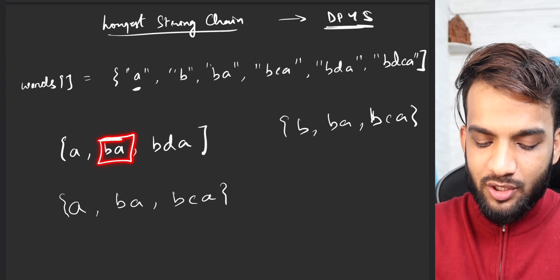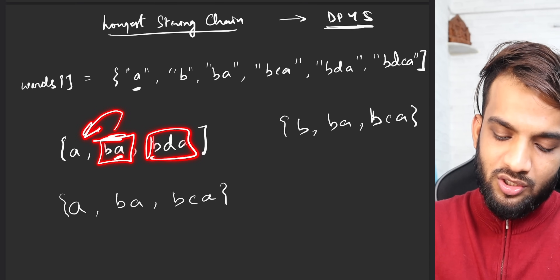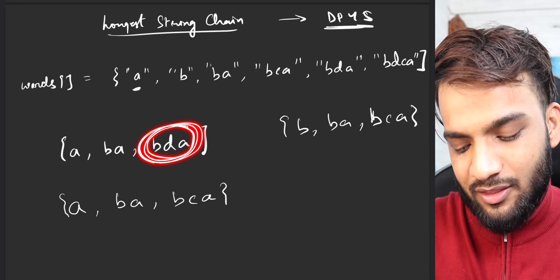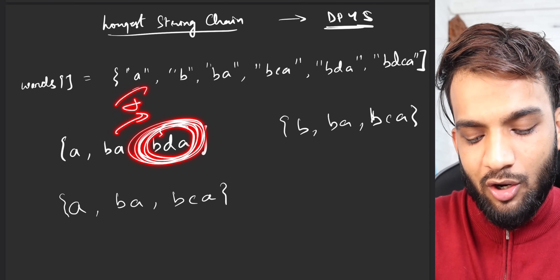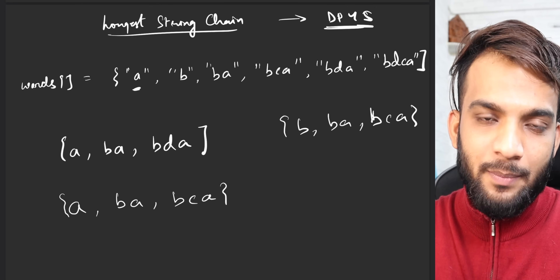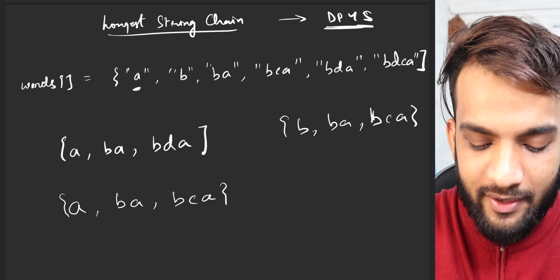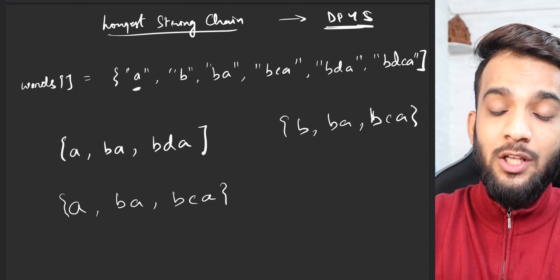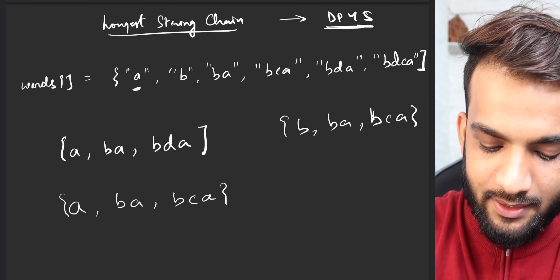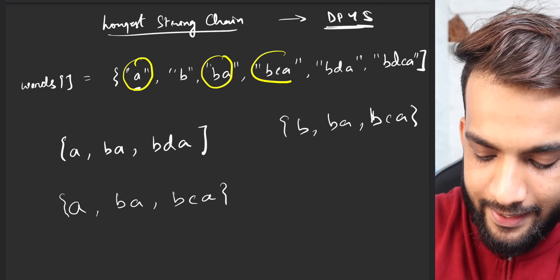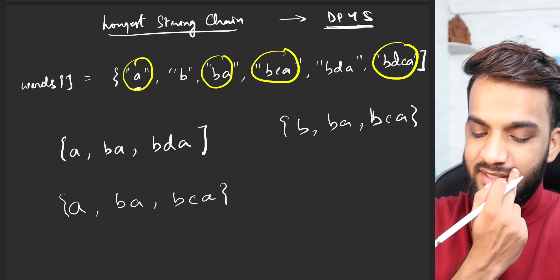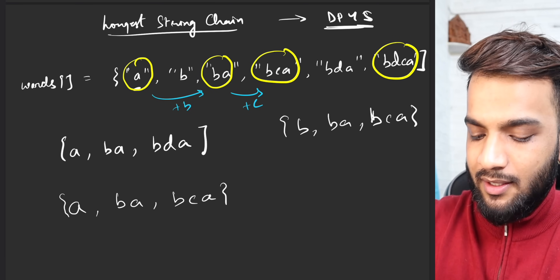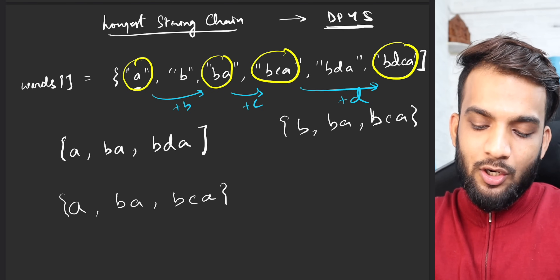If you are talking about this, the previous word should differ by one deletion. So that is what a string chain is - you can call this a chain if you have just added one character at any given place in a word. Now whenever we attach 'longest', it means you have to find the longest among all chains possible. So which will be the longest chain?